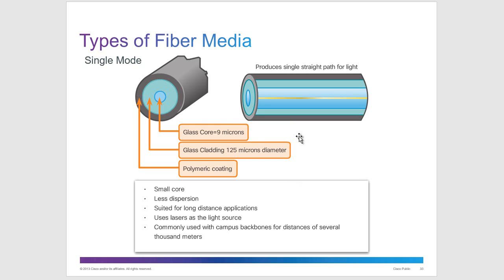Single-mode fiber optic has a smaller core, less dispersion, and is suited for long-distance applications. It uses lasers as the light source and is commonly used for campus backbones covering distances of several thousand meters. Single-mode can travel much further than multi-mode or copper cabling and is the backbone choice when long distances need to be covered.